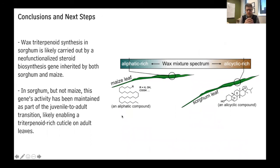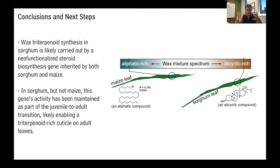To wrap up: wax triterpenoid synthesis in sorghum is likely carried out by what appears to be a neo-functionalized steroid biosynthesis gene. There was a gene involved in steroid-type hormone biosynthesis; a copy was created, one of those two copies diverged and became capable of creating leaf wax compounds. Both maize and sorghum inherited that copy, but maize hasn't maintained it. In sorghum but not maize, this gene's activity has been maintained as part of the juvenile-to-adult transition, enabling a triterpenoid-rich cuticle on adult leaves that protects those leaves over the majority of their lifespan.